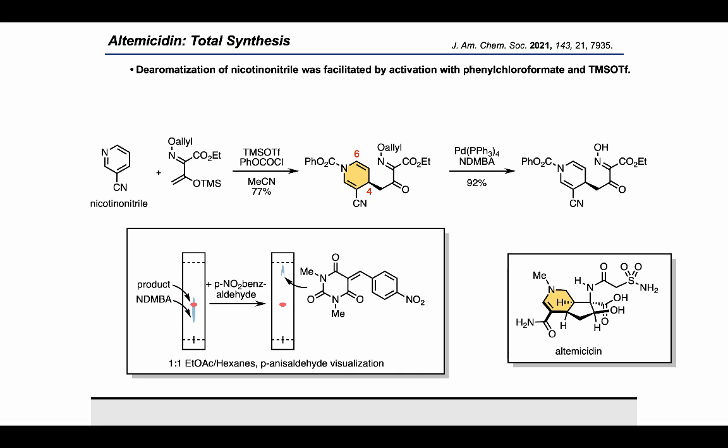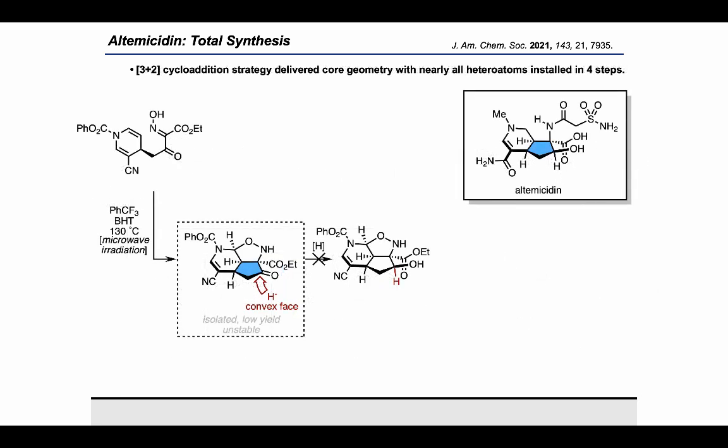Our efforts were next directed toward forging the key alpha tertiary amine stereocenter. Attempts to utilize the dihydropyridine as a nucleophilic enamine in an addition reaction to the oxime pi bond failed and led us to the realization that a dipolar cycloaddition strategy was required.